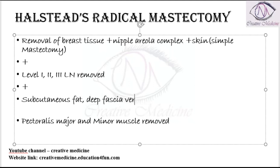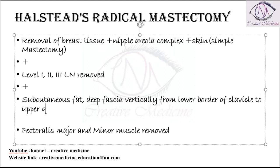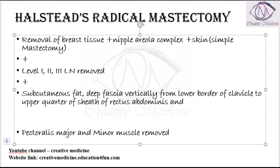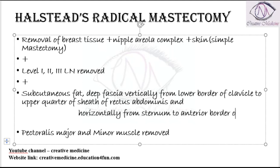The deep fascia is removed vertically from the lower border of the clavicle to the upper quarter of the rectus sheath of rectus abdominis. It is removed horizontally from the sternum to the anterior border of latissimus dorsi.